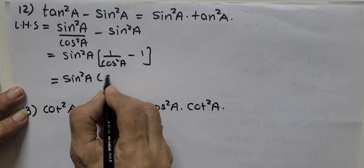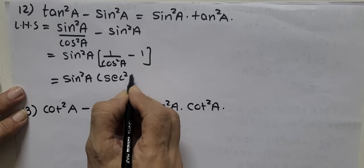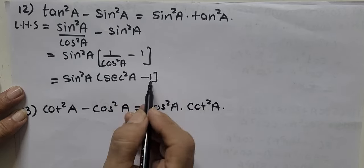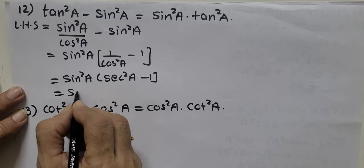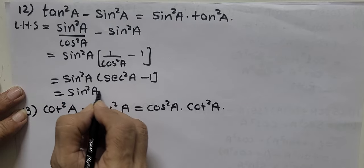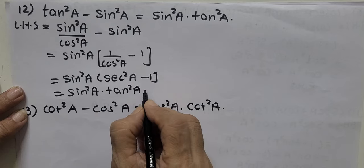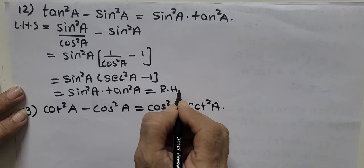1 upon cos square is sec square A minus 1. And sec square A minus 1 is tan square A into tan square A. That is our LHS.